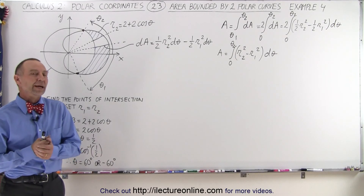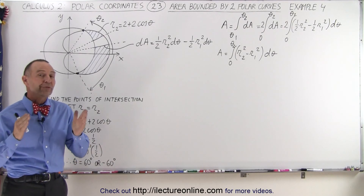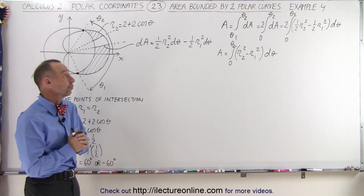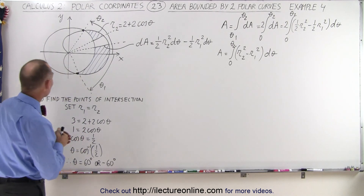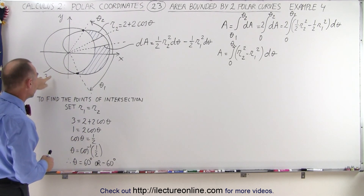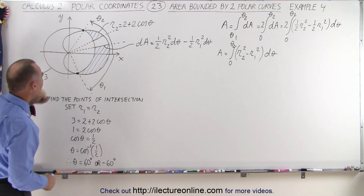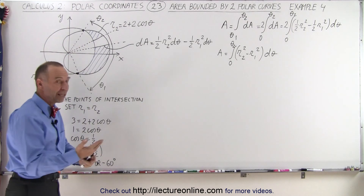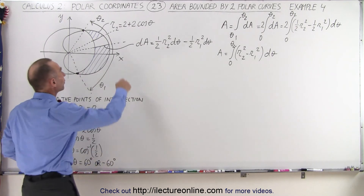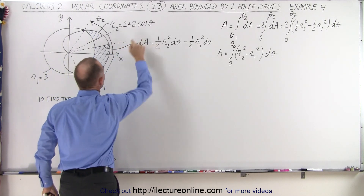Welcome to Electronline. In this example, we're going to find the area bounded by two polar curves. The two curves: R1 is defined by the number 3, which means we have a circle of radius 3. The second curve, R2, is equal to 2 plus 2 times the cosine of theta.